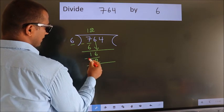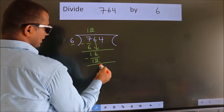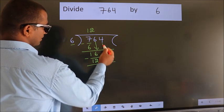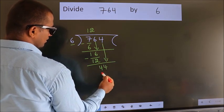Now we subtract. We get 4. After this, bring down the beside number. So, 4 down. So, 44.